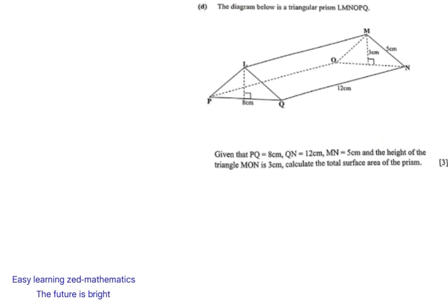The diagram below is a triangular prism L, M, N, O, P, Q. As you can see, that is the triangular prism. The question states: given that PQ is equal to 8, QN is equal to 12 centimeters, MN is equal to 5 centimeters, and the height of the triangle MON is 3 centimeters.